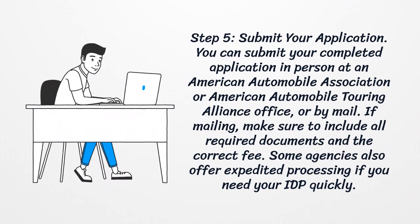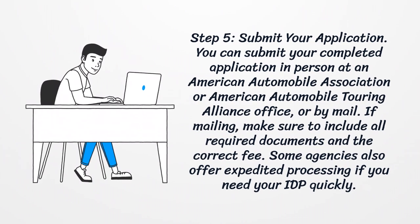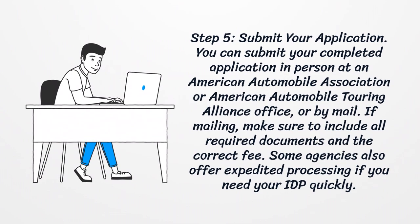Step 5: Submit your application. You can submit your completed application in person at an American Automobile Association or American Automobile Touring Alliance office, or by mail. If mailing, make sure to include all required documents and the correct fee. Some agencies also offer expedited processing if you need your IDP quickly.